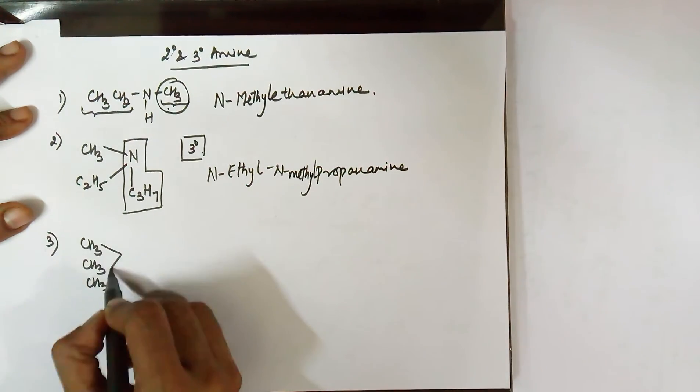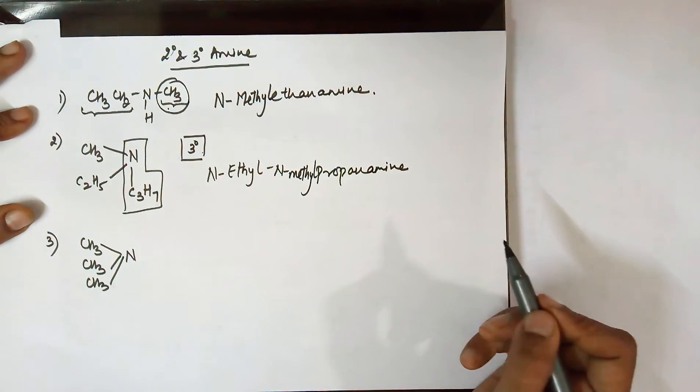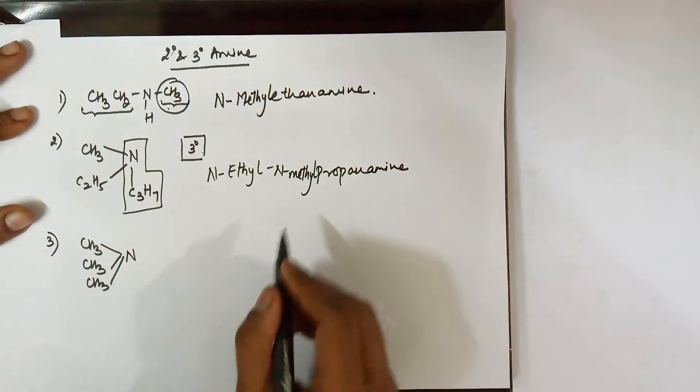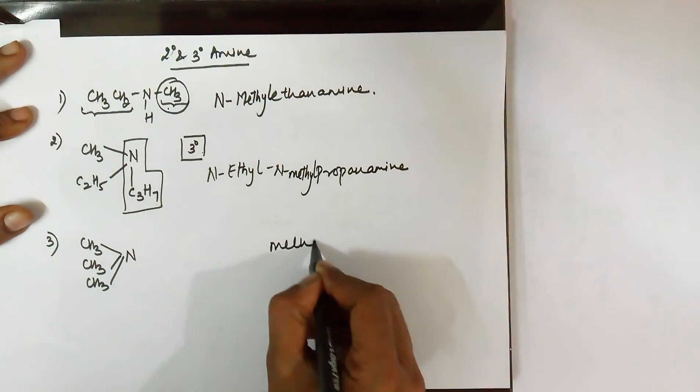I'll take one more last example. Just in case all the three R groups remain same - none of them is different or bulkier - so you can choose any one of them as the parent chain and call it as methanamine.